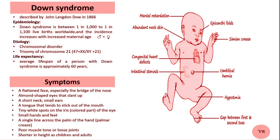This breakthrough established the genetic cause of the condition. Down syndrome, also known as Trisomy 21, is a genetic condition caused by the presence of an extra copy of chromosome 21. Normally, people have 46 chromosomes arranged in 23 pairs. However, individuals with Down syndrome have an extra chromosome 21, making a total of 47 chromosomes.